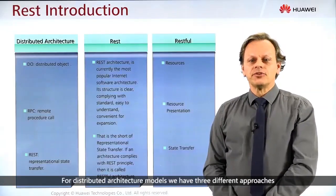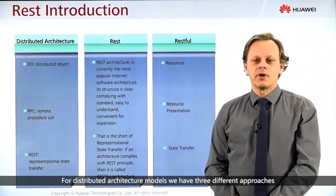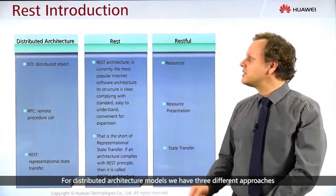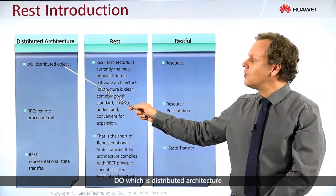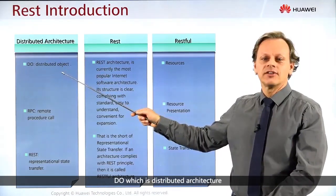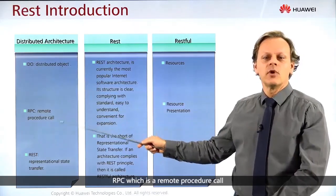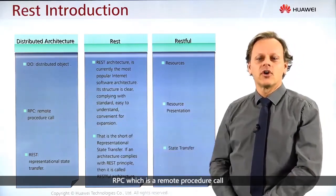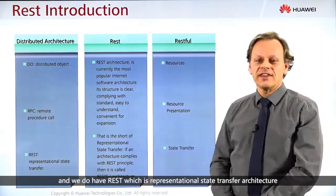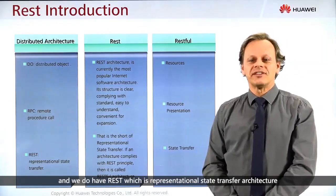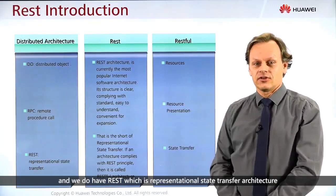For distributed architecture models like the World Wide Web we have three different approaches: DO, which is distributed architecture; RPC, which is remote procedure call; and REST, which is representational state transfer architecture.